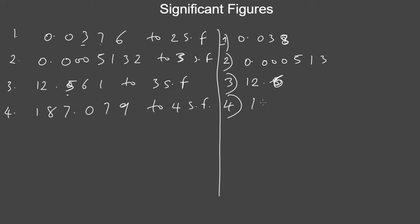For 187.079 to four significant figures, count one, two, three, four — giving 1, 8, 7, 0. Note that we include the zero because we've already started counting. You only skip zeros before the first non-zero digit. So you have 187.0. Check the next digit: it's 7, which is more than 5, so add one to the zero. The answer is 187.1.